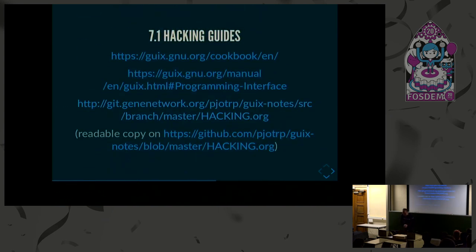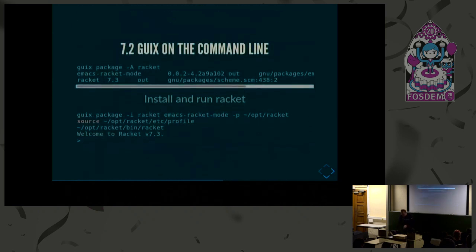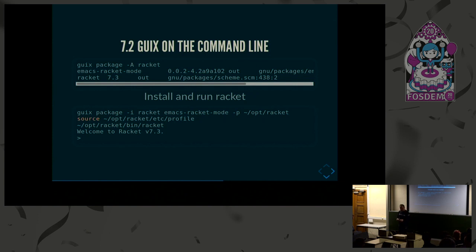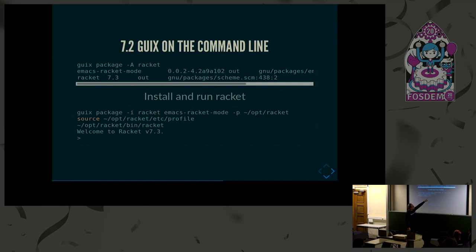GnuGuix - GnuGeeks you've heard of before. It's a package manager, a functional package manager, essentially written in Guile, which is a Lisp. There are many flavors of Lisp - this one is a Scheme. When you install something with Geeks on the command line, you can do something like 'geeks package install racket ematch racket-mode'. Then you load the profile, which sets environment variables, and then run the program from opt/racket/bin/racket, and it gives you a prompt.